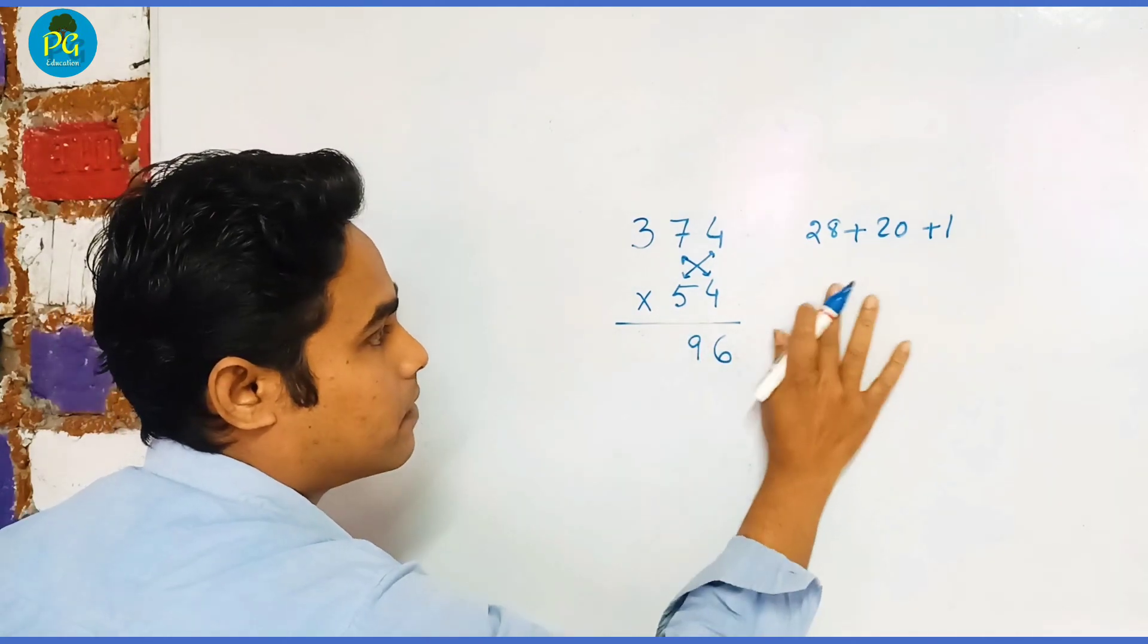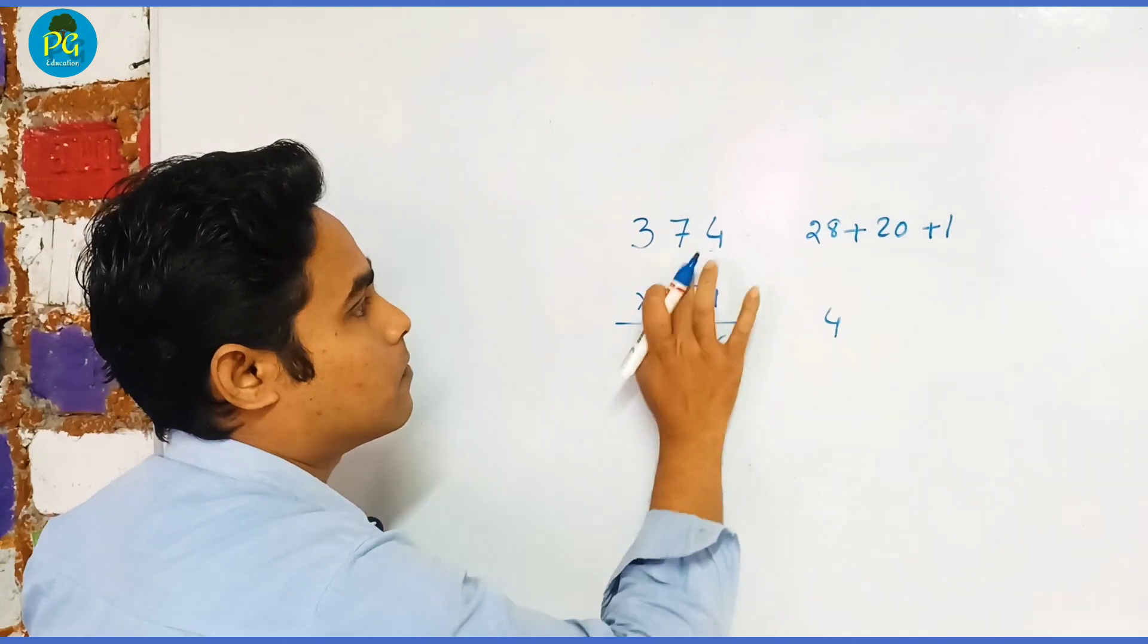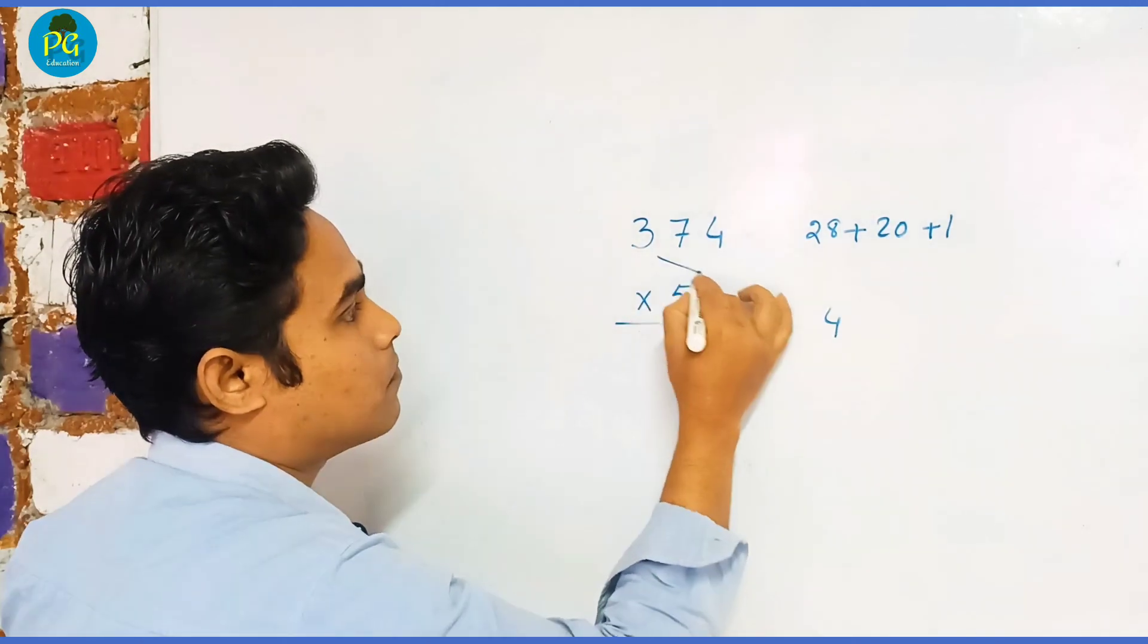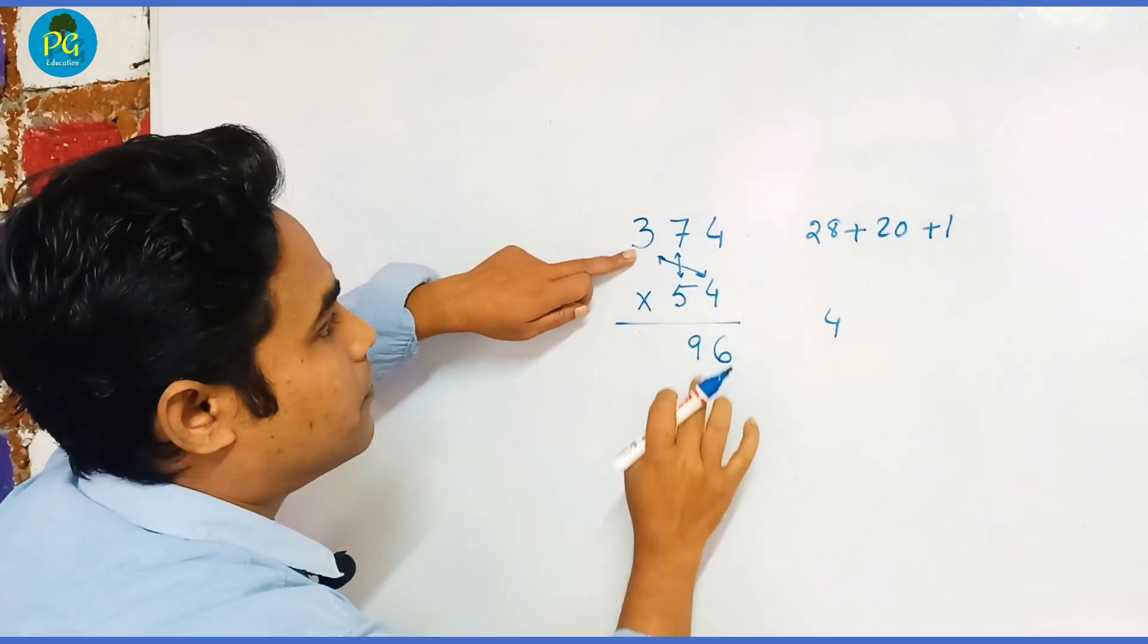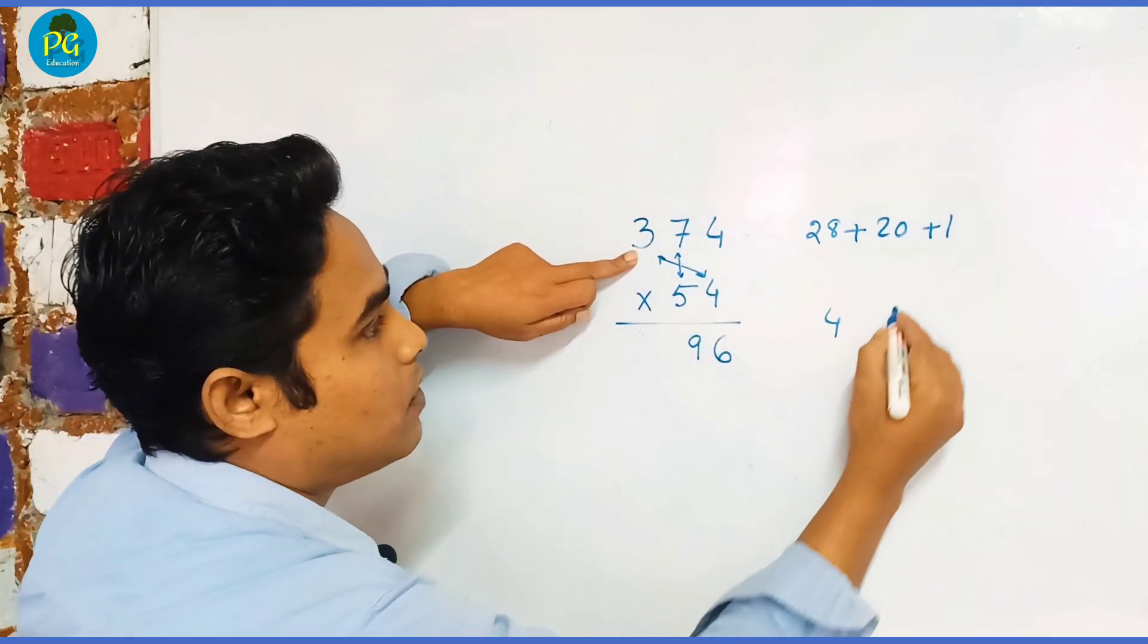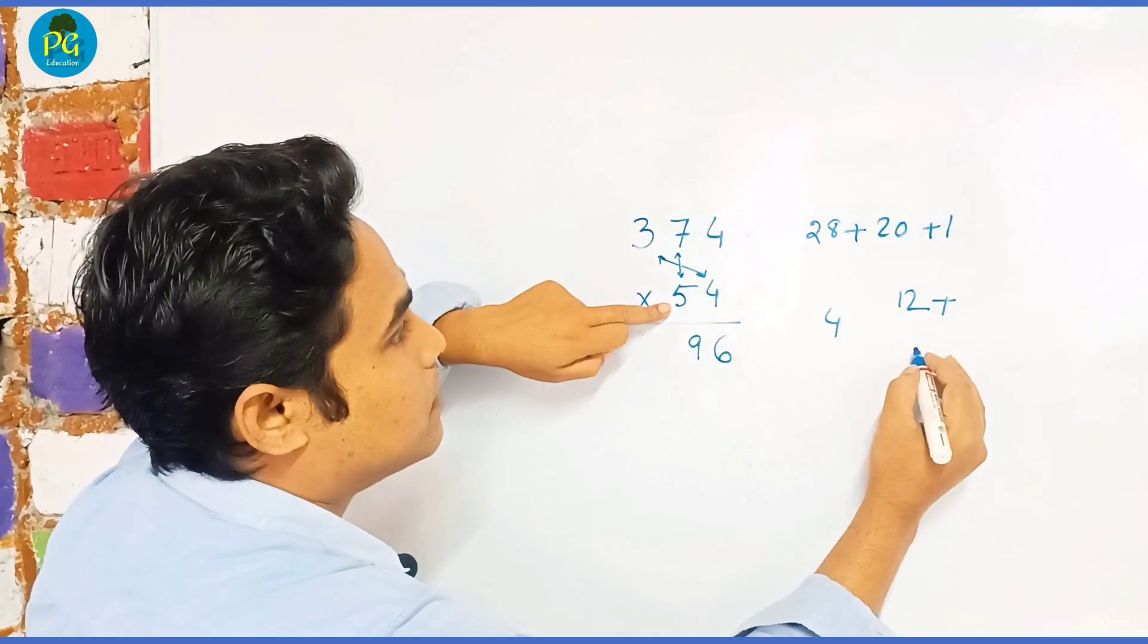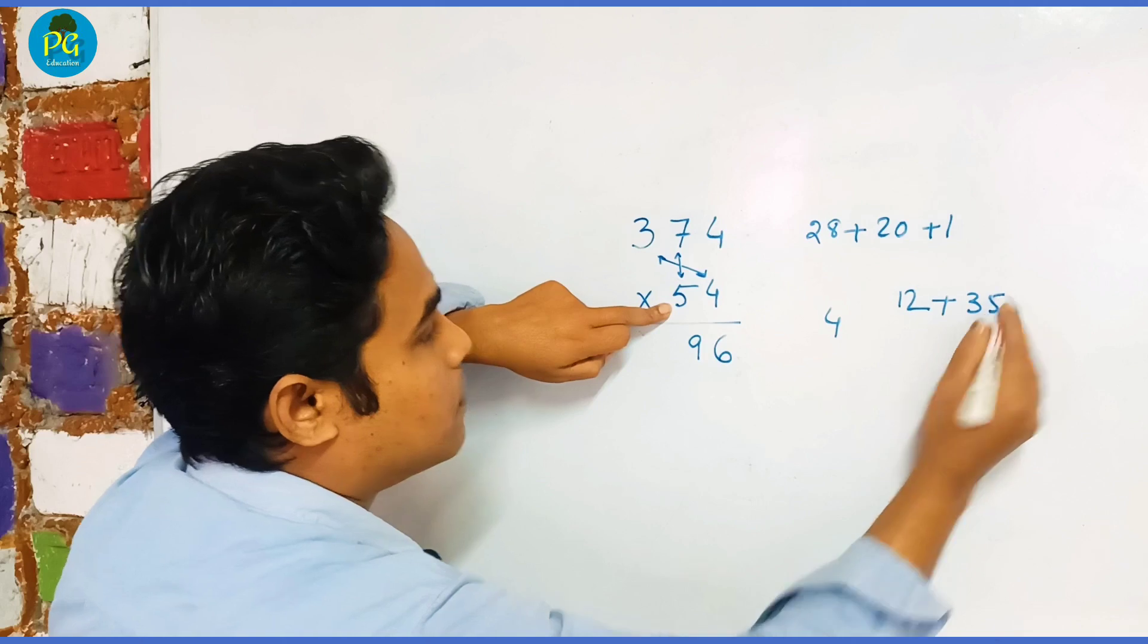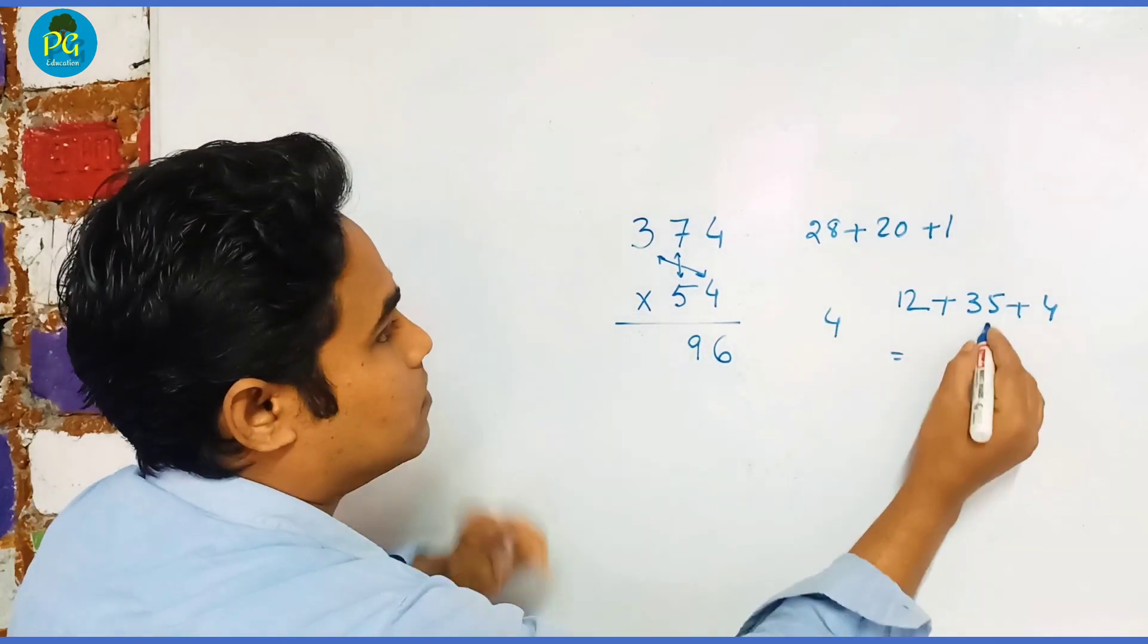We'll multiply 3 and 4: 4 × 3 = 12, plus 7 × 5 = 35, plus this 4, so this is 51, write 1 and carry 5.